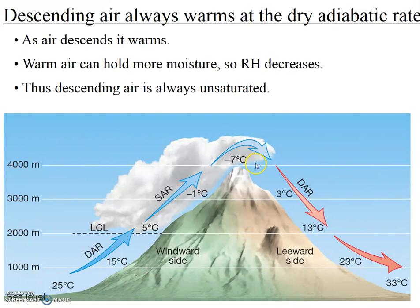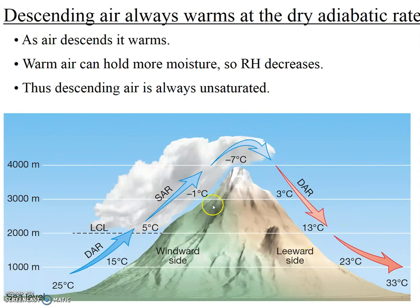Interestingly, as this dry air warms as it goes down the mountain and eventually warms to a higher temperature than it started, this warm, drying air can literally suck moisture right out of the landscape on the way down the mountain, helping contribute to what we call the rain shadow effect. The rain shadow effect is an area of low rainfall on the leeward side of a mountain range or topographic barrier. We call this the windward side of the mountain and this the leeward side — the leeward side tends to be drier and the windward side tends to be wetter.